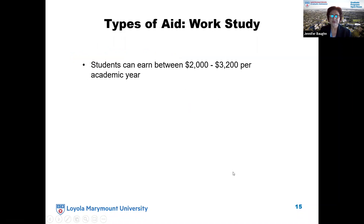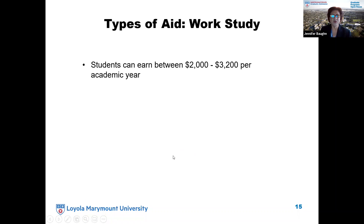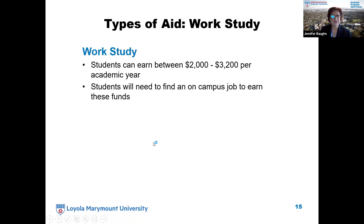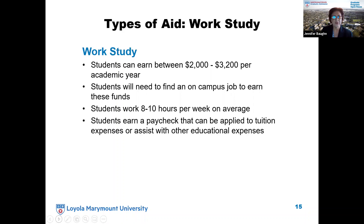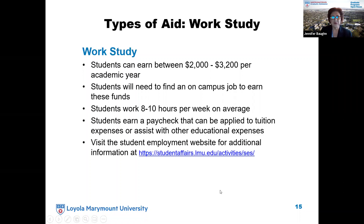Work study: students can apply for work study as a graduate student and can earn between $200 to $3,200 per academic year. Students will need to find a job on campus — even though we award you work study, it's still up to the student to find a position. Student Employment Services can assist students with finding jobs on campus. Students can work eight to ten hours per week on average and earn a paycheck, which you can use for educational expenses or opt to have applied toward your tuition and fees. Visit studentaffairs.lmu.edu/activities/SES for additional information.